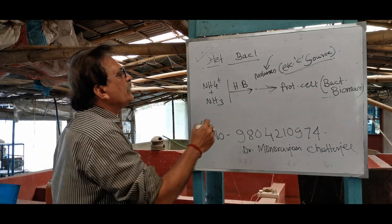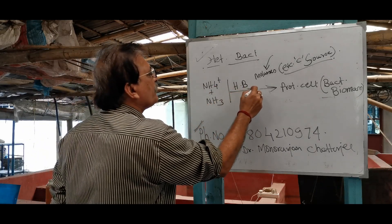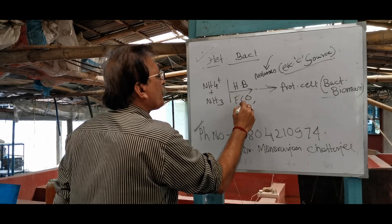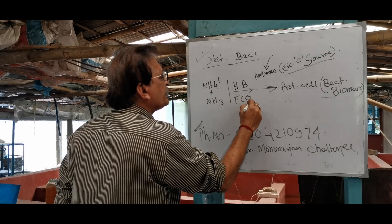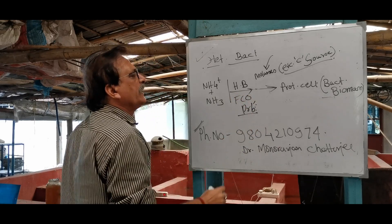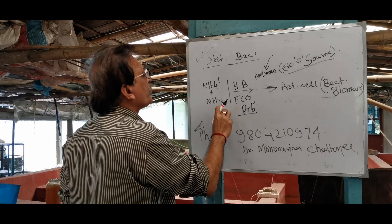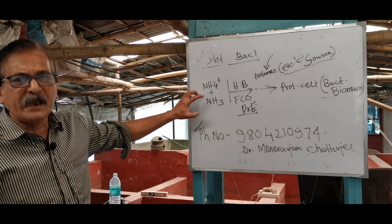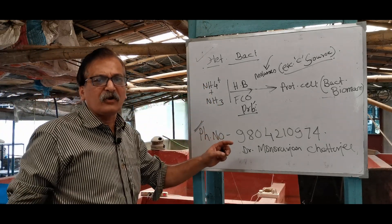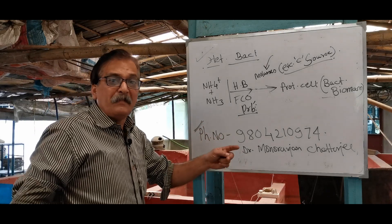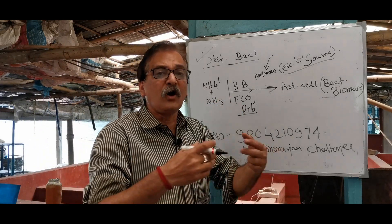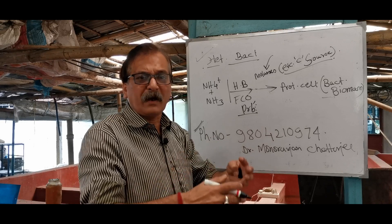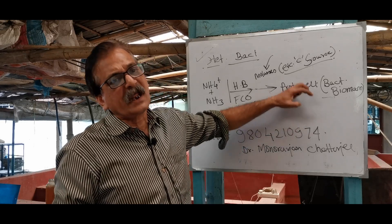What is the heterotrophic bacteria? If you are working on a protein cell, you need to be able to form the protein cell. You can get a bacterial biomass, and you will be able to form the amino acid.